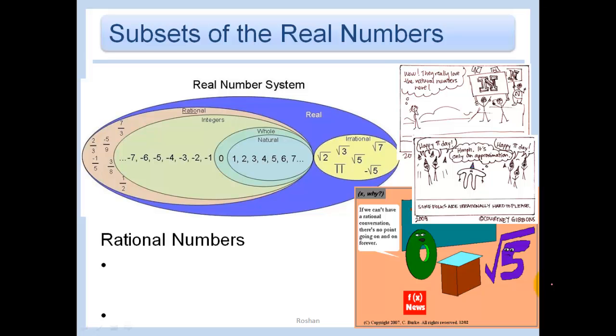Let's begin with talking about the subsets of the real numbers. Within the real number system, we have rational numbers and irrational numbers. Within the rational numbers, we have natural numbers, whole numbers, and integers.